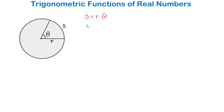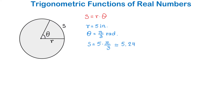For example, let the radius of this circle be 5 inches and the measure of angle theta be pi over 3 radians. To find the length of the arc intercepted by this angle, we multiply 5 by pi over 3. Using a calculator and rounding the answer, the length of this arc is approximately 5.24 inches.